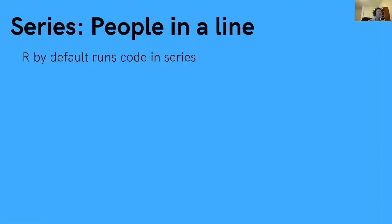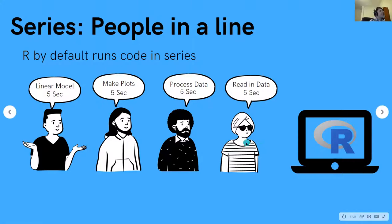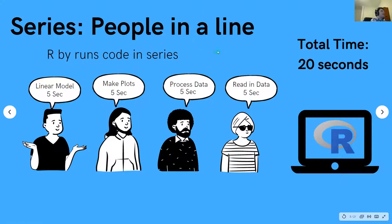Think of it like people in a line. Say you have an R computer — an office with only one computer that runs R — and Susan, Bob, Carl, and Jimmy all have various tasks to do. Susan needs to read in the data, Bob processes the data, Jimmy makes some plots, and Carl makes some models. This is how R code runs when you write it — it runs sequentially, one step after another, and the time adds up for a total of 20 seconds.